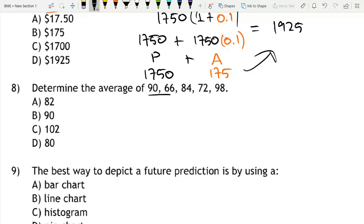Now determine the average of 90, 66, 84, 72, and 98. If you're not familiar with this term, calculating the average, we have various videos on statistics, mean, median, and mode, and simple versus weighted average. I encourage that you watch those first before coming to this.